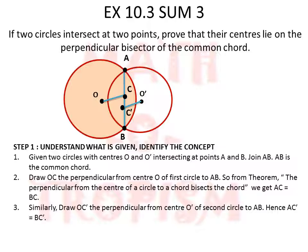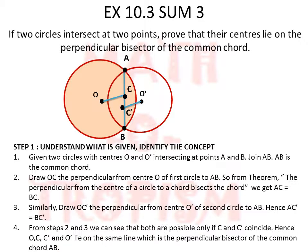From these two steps, we can see that AC equals BC and also AC' equals BC'. This is possible only if C and C' are coinciding. That means O and O' lie on the common perpendicular bisector of the common chord AB, so both centers lie on that line.